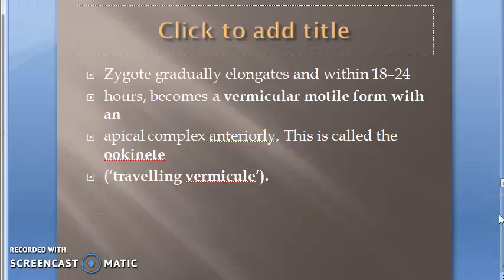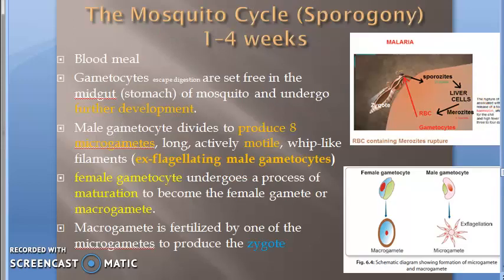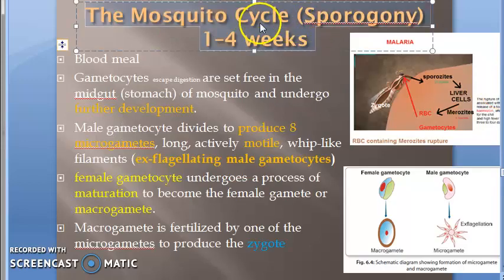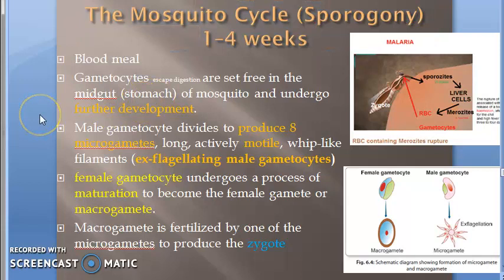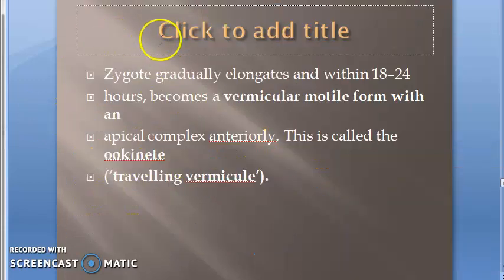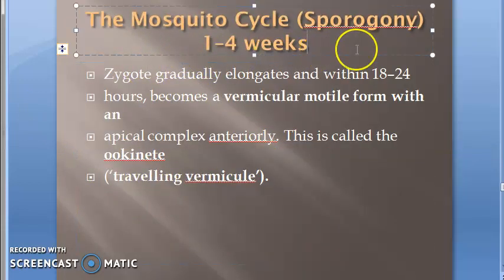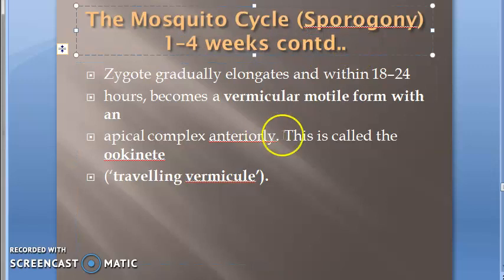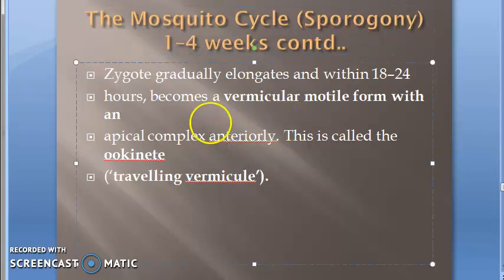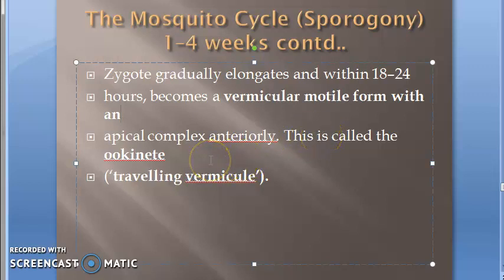We are continuing with the sporogonic mosquito cycle. This takes one to four weeks in the mosquito. The zygote gradually elongates and within 18 to 24 hours becomes a vermicular motile form.